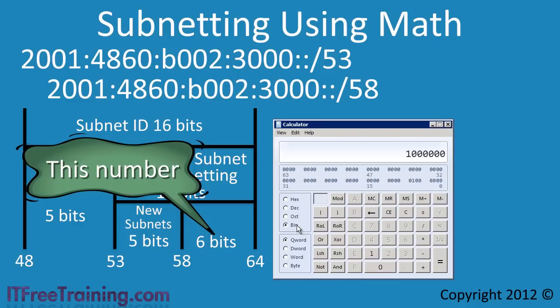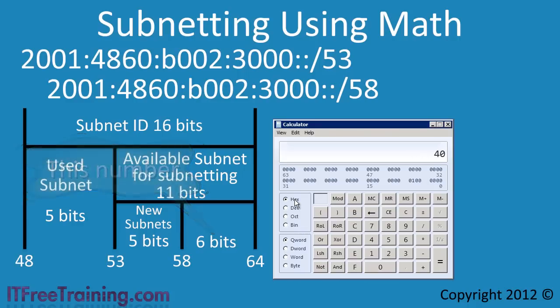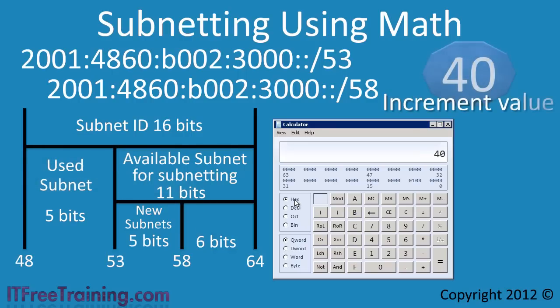Once this is done, select the option hexadecimal. There it is, 40. The value that needs to be added on to work out each new address range.